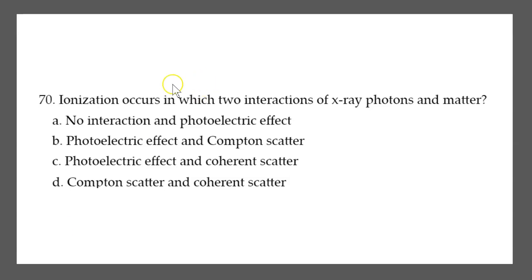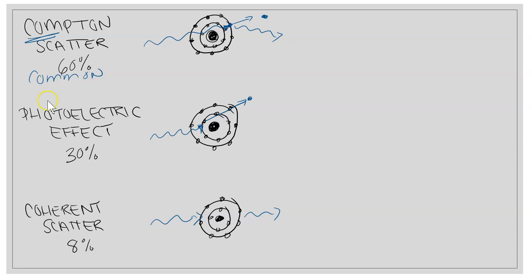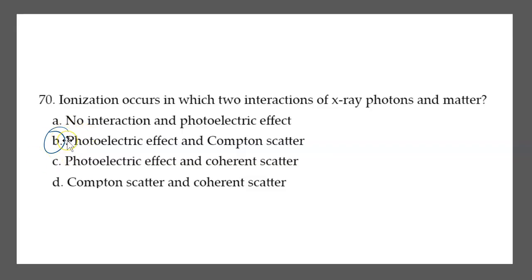Question: ionization occurs in which two interactions of x-ray photons and matter? The answer is B — photoelectric effect and Compton scatter. In both, the electron is kicked out, causing ionization. In coherent scatter, no electron is ejected, so no ionization occurs.